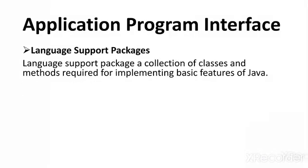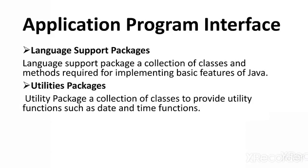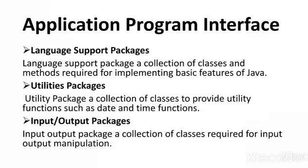Language support packages are a collection of classes and methods required for implementing the basic features of Java — the basic functions needed to write simple Java programs are provided by language support packages. Utility packages are a collection of classes that provide utility functions such as date, time, etc. Input/output packages consist of a set of classes and methods required for carrying out input and output operations in Java.